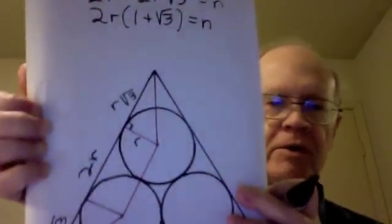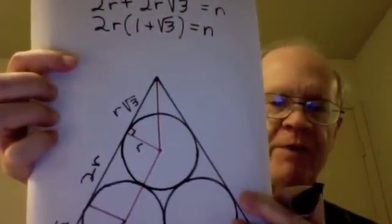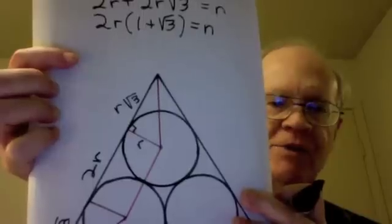I will write that new equation now. 2r times 1 plus the square root of 3 equals n.